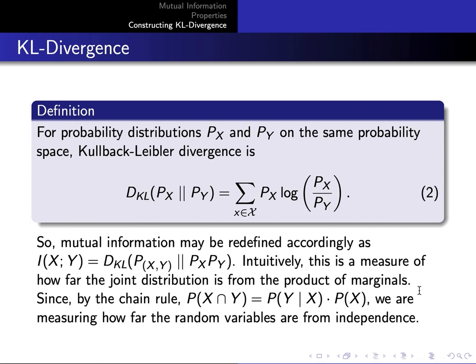So we are measuring how far the random variables are from independence. Because if two random variables were independent, then they would share zero mutual information.